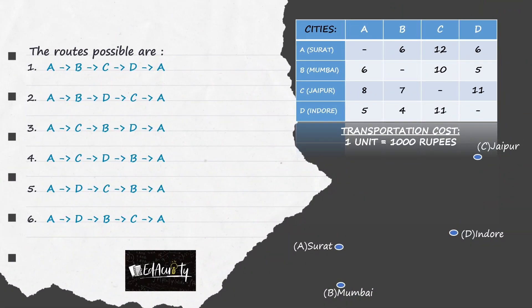Now, let us find the transportation costs associated with each route. Here you can see all the six possible combinations of the routes. The very first route is A to B, B to C, C to D, D to A. That is, the manufacturing factory will first transport its goods from Surat to Mumbai, then from Mumbai to Jaipur, Jaipur to Indore, and from Indore it comes back to Surat.